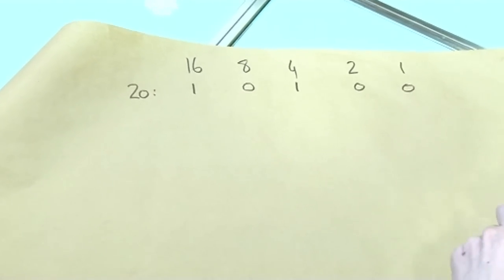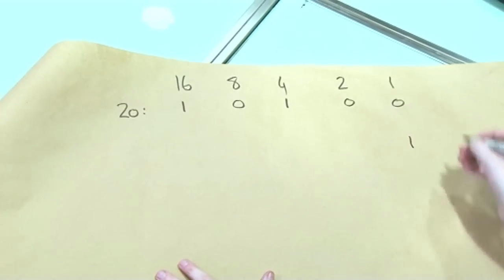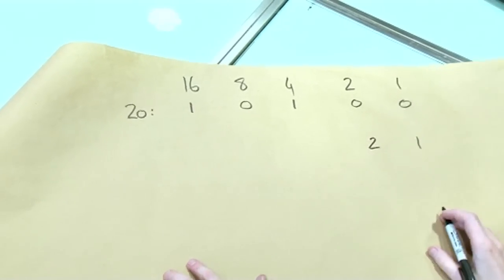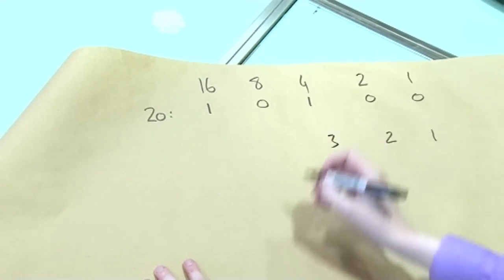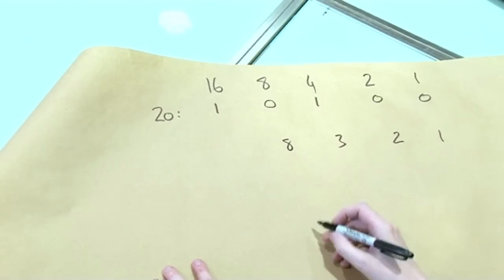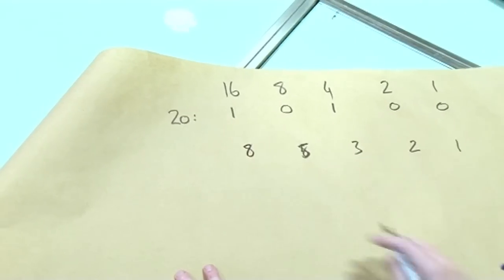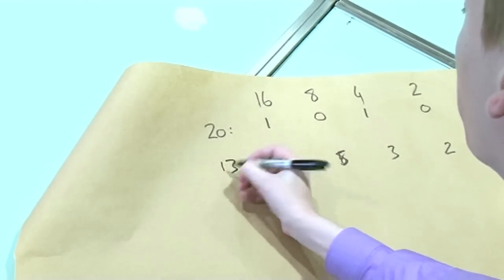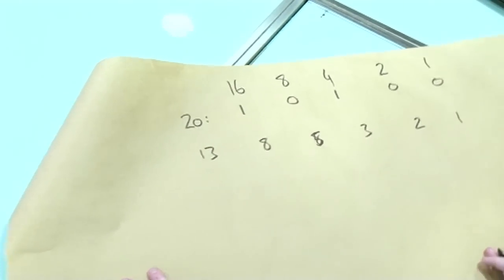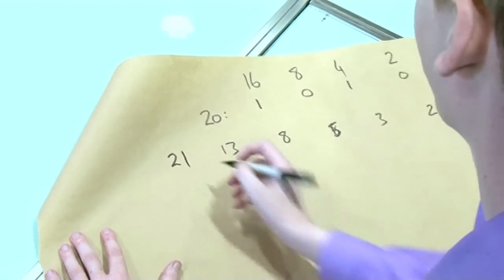So let's write out the Fibonacci numbers. There's 1. There's 2. There is 3. And there's 8. No, there's 5. Get that right, James. And then there's 8. Then there's 13. And 21. Shall I go up to 21? There we go. Right.